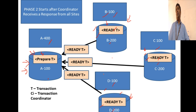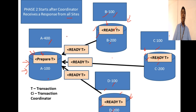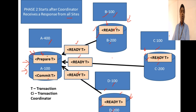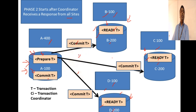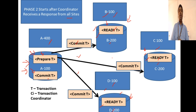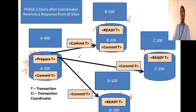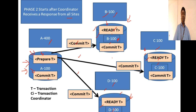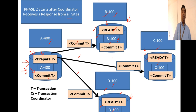Now phase 2 starts. The coordinator checks whether it has received a ready message from all the participants. If it has, it logs a commit record and then sends a commit message to all the participants. Since everyone said they are ready, the coordinator sends commit to all participants. The participants also log this commit record on the hard disk and then apply the data changes.